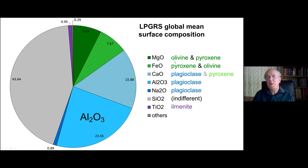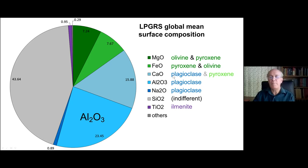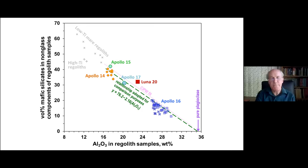Alumina is almost like a proxy for plagioclase feldspar, and the iron and magnesium oxides are proxies for mafic silicate. One thing about the moon is that its surface materials are very rich in aluminum and plagioclase. I'll be talking a lot about mafic silicate abundance, plagioclase abundance, and alumina concentration in the samples. There's a pretty straightforward relationship among highland materials between aluminum weight percent and the amount of mafic silicate — which is the complementary mineralogy.